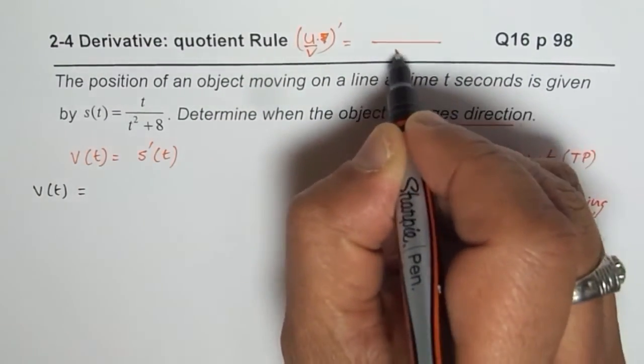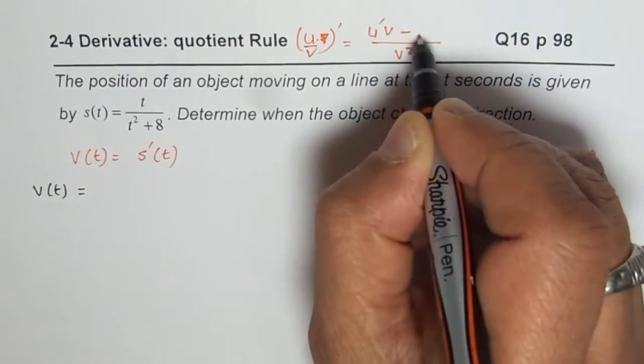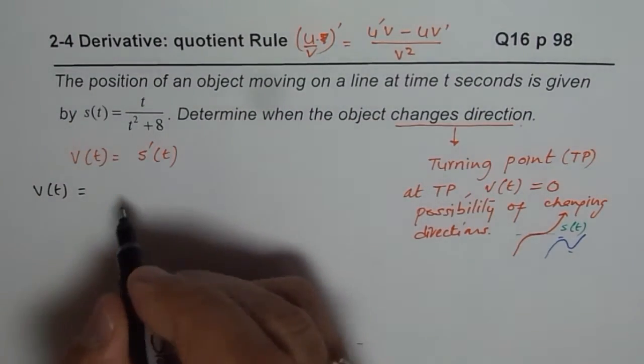in that case, we are looking for v squared in the denominator, derivative of u times v minus u times v derivative. So, we will apply this formula.